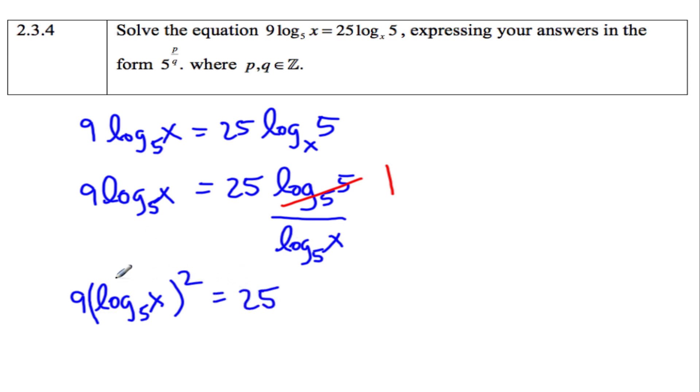Now notice, this is a very common mistake: This is not x². I cannot bring this 2 down. It's just the log squared, not the x. Very common mistake. I'm going to divide by 9 now, so (log₅(x))² = 25/9.